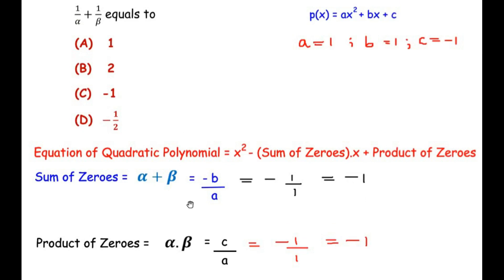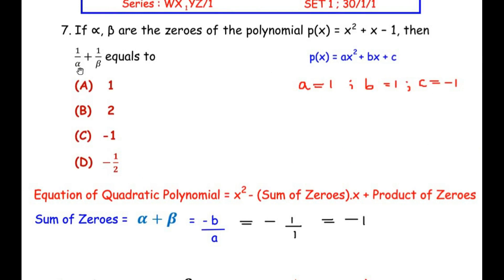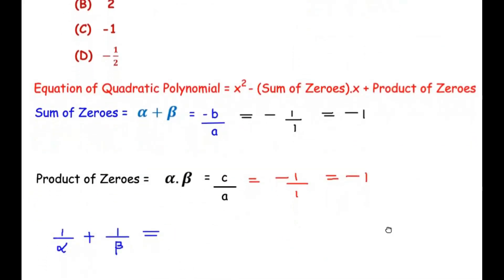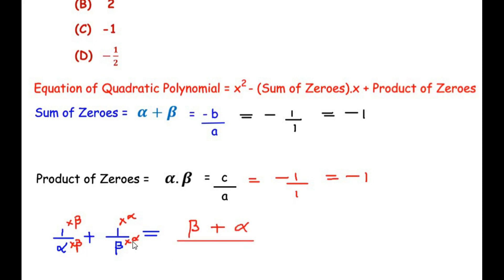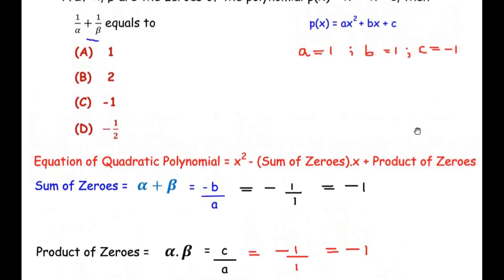Now, 1/α + 1/β = (β + α) / (αβ). The numerator is α + β = −1 and the denominator is αβ = −1. The minus from numerator cancels the minus from denominator, leaving positive 1. So the value of 1/α + 1/β is 1, and our answer is option A.